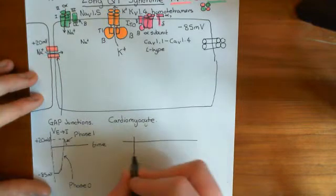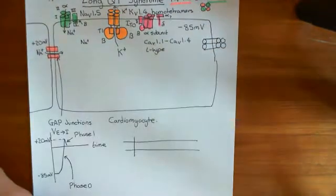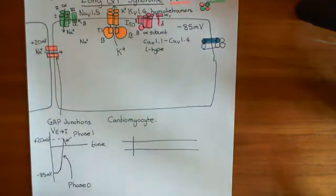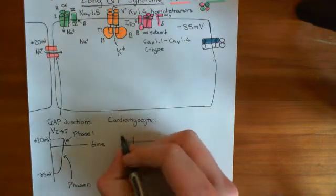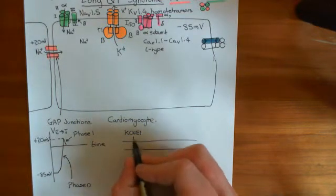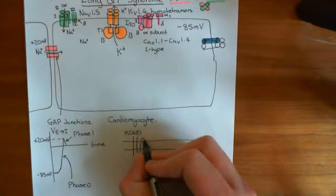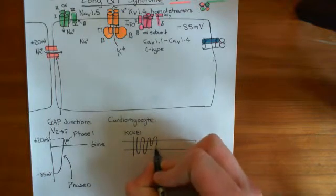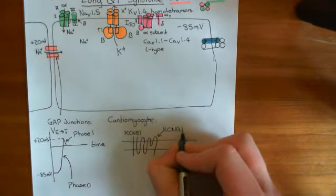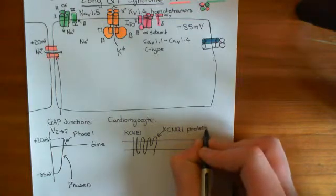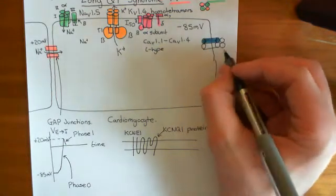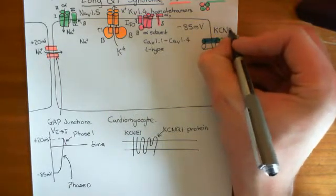Looking at the membrane-spanning topology of one subunit in more detail, it consists of two proteins. One is called the KCNE1 protein, which is a protein that straddles the membrane a single time. The main protein making up this subunit is another protein with the more conventional potassium channel structure — this is the KCNQ1 protein. Together these two proteins make a single subunit of the tetramer that forms the overall potassium channel, usually referred to as the KCNQ1 potassium channel.